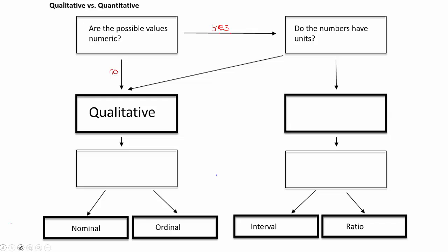If the numbers do not have units — if the answer to that question is no — that brings us back to qualitative data. When we answer yes, meaning the numbers are measuring something, we take a different path. The no answer means the numbers stand for something else. An example is a Likert scale, where you may use 1 for totally disagree and 5 for totally agree — those numbers have no labels and stand for something else.